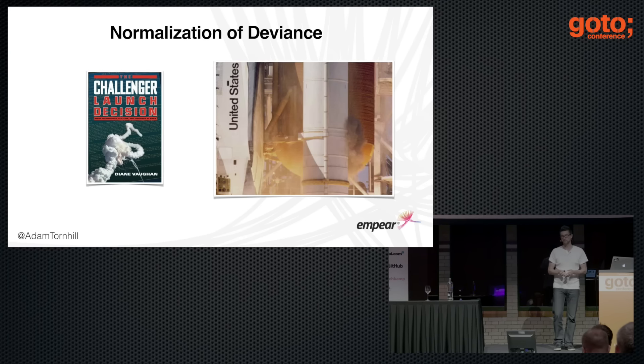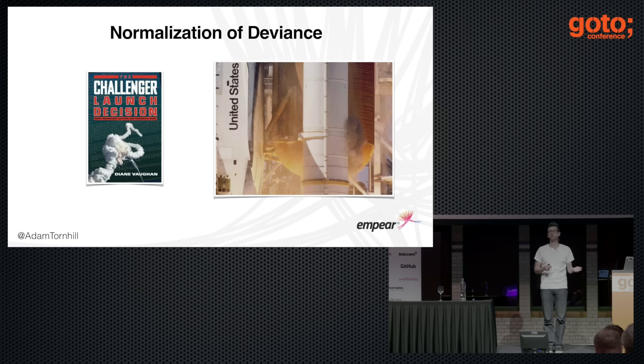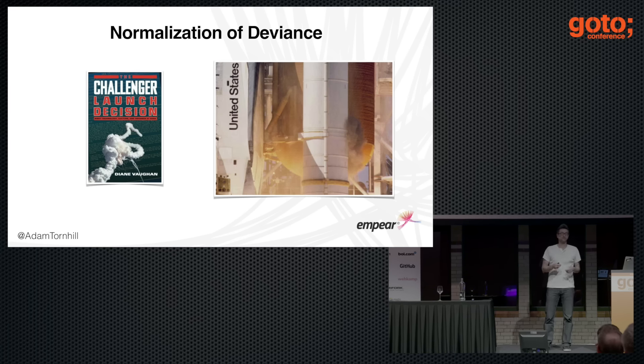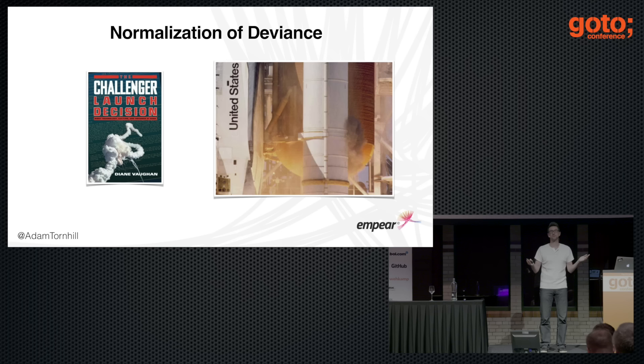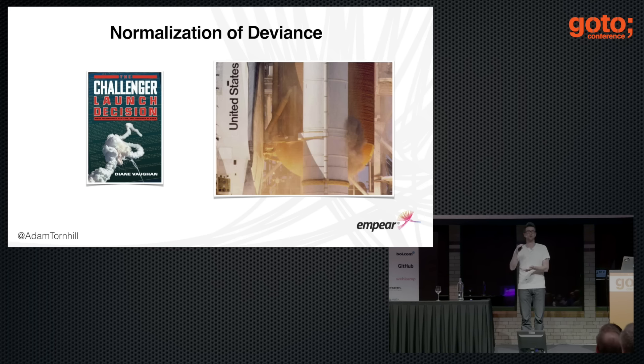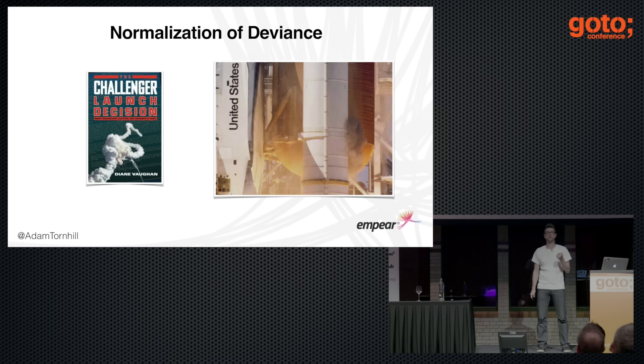Each time you accept a risk, you get a new point of reference — the deviation becomes your new normal. The normalization of deviance is about people, and we have it in software development too. Let's say you start working on a code base and inherit a file with 5,000 lines of code. If you work with that long enough, it becomes your new normal. After a while you have 6,000, then 7,000 lines of code. We need some way of catching the normalization of deviance in our code base.